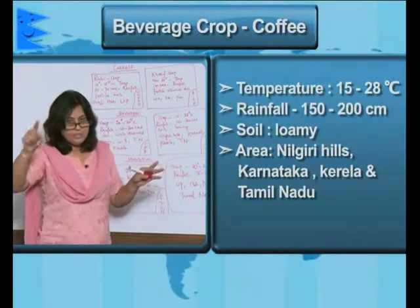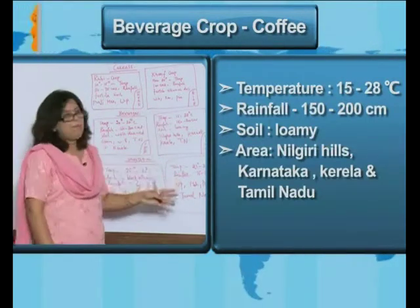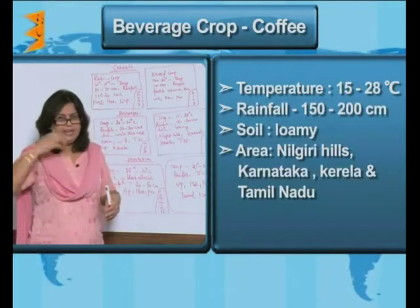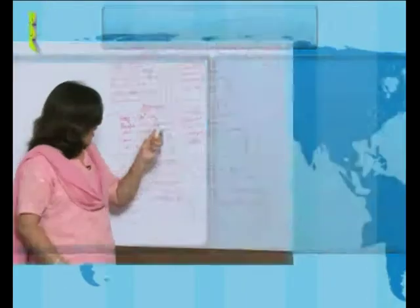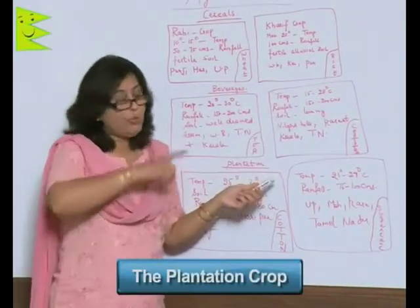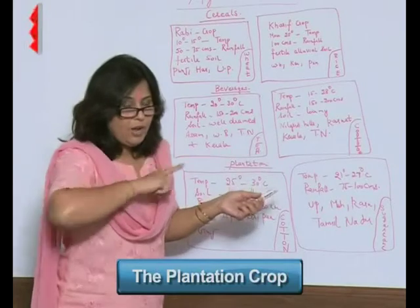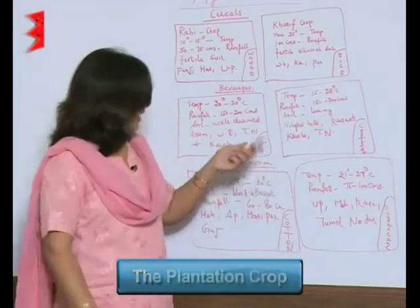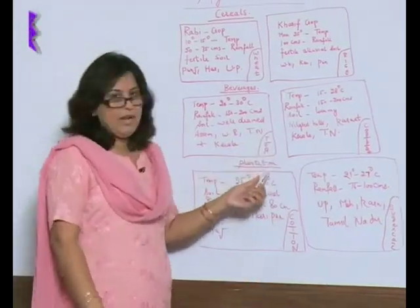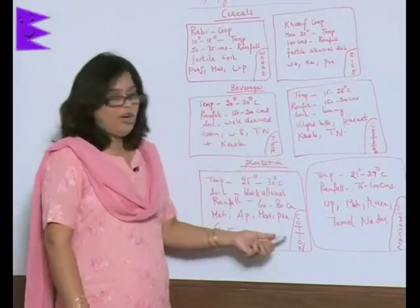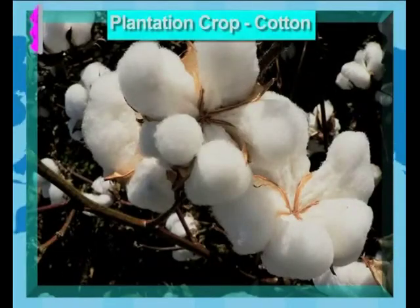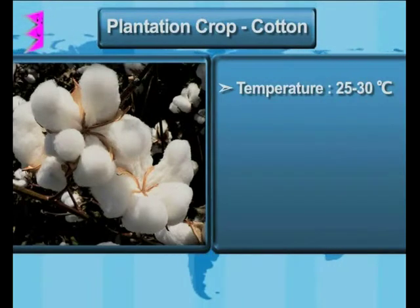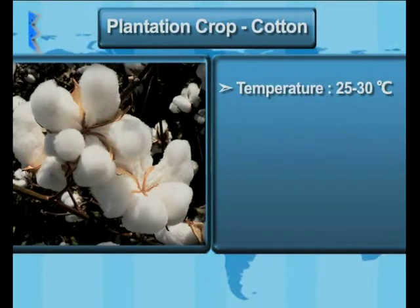The plantation crops — what is a plantation crop? It is a single crop grown on a large scale. The first plantation crop is cotton. The temperature required is 25 to 30 degrees centigrade.